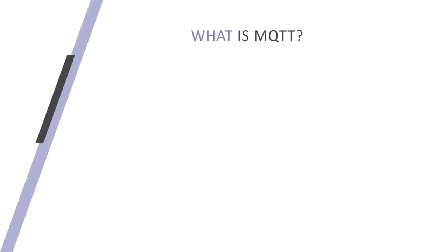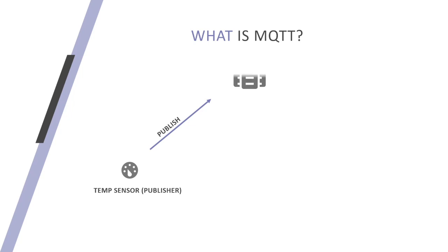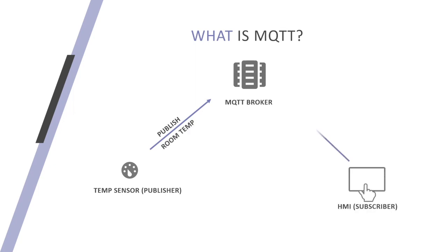Taking these real-life examples, the concept of MQTT is exactly the same. Consider a temperature sensor recording a certain room's temperature — this will act as a publisher publishing its values over an MQTT broker. These values get published over a topic named room temp. An HMI is a client interested in knowing the latest room temperature values, and this HMI will subscribe to the MQTT broker over the same topic, room temp.